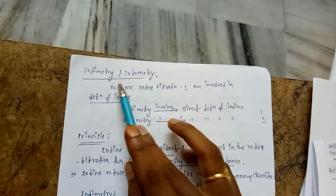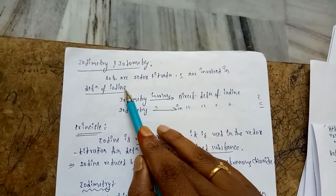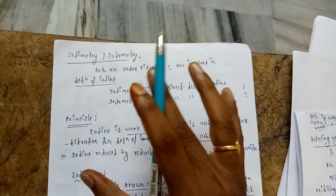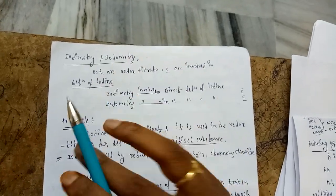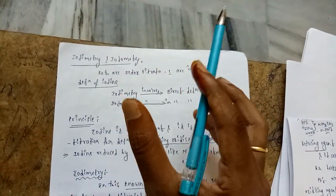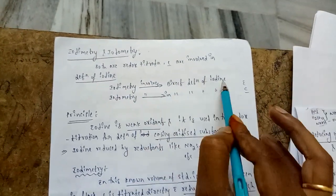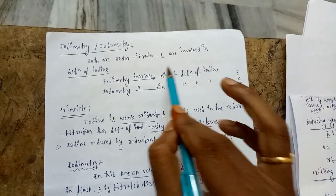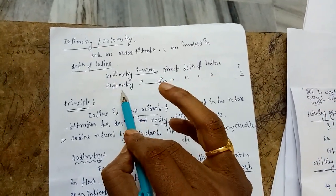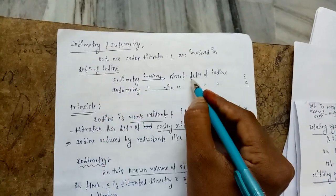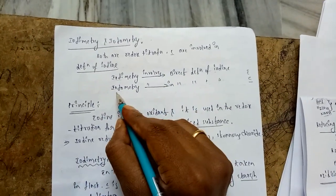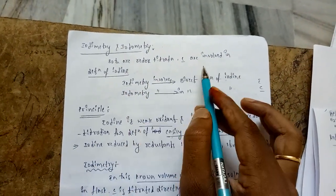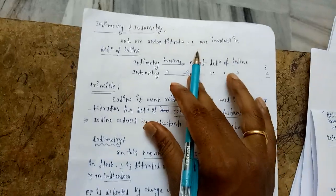Both iodimetry and iodometry are redox titrations which involve the determination of iodine. Based on the determination of iodine, they have a small variation. Iodimetry involves direct determination of iodine. Iodometry involves indirect determination of iodine. That is the basic difference between iodimetry and iodometry.